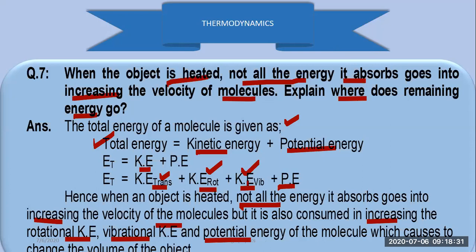When an object is heated, not all the energy it absorbs goes to increase the velocity of the molecule. It is also consumed in increasing the rotational and vibrational kinetic energy, and the potential energy of the molecule, which causes a change in the volume of the object. The volume of the object changes due to this energy.